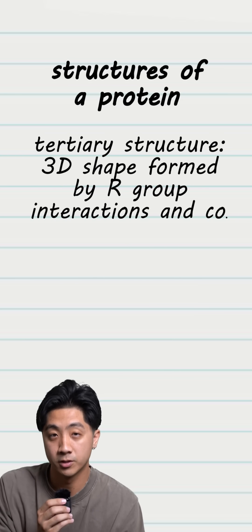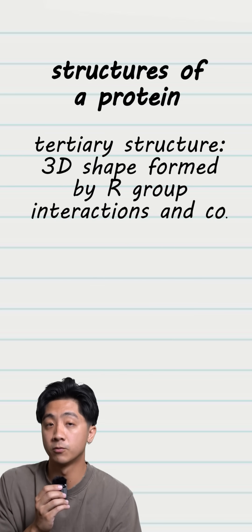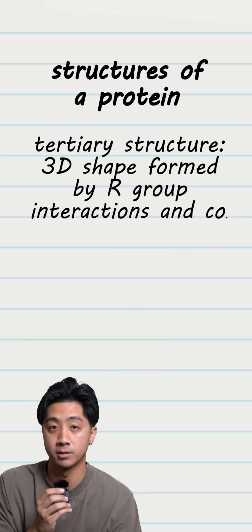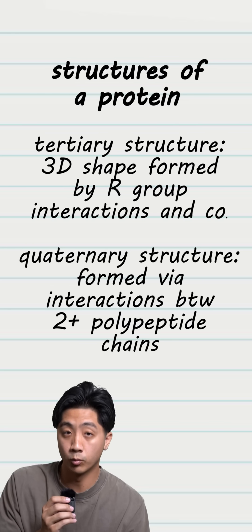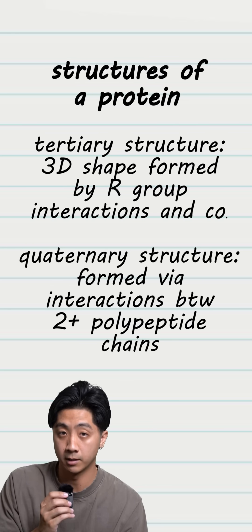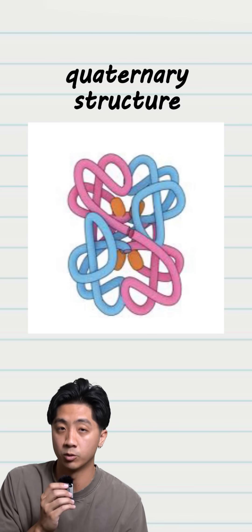The tertiary structure refers to the 3D shape of the protein, which is formed through the R group interactions. The quaternary structure occurs when multiple polypeptides, or proteins, come together. This doesn't happen with every single protein.